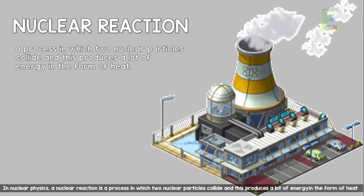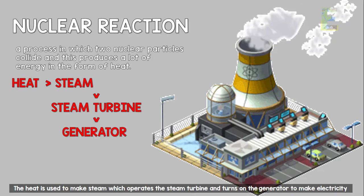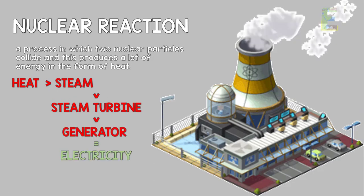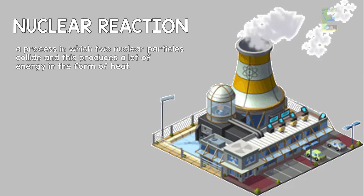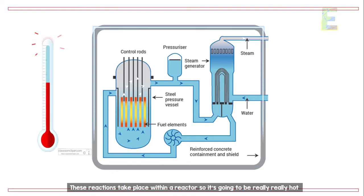And this produces a lot of energy in the form of heat. The heat is used to make steam which operates the steam turbine and turns on the generator to make electricity. These reactions take place within a reactor, so it's going to be really, really hot.